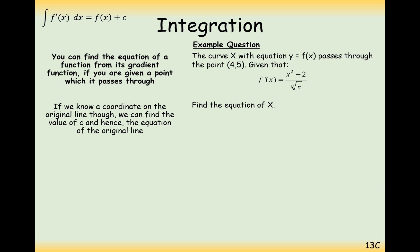Another tricky question here. We have the gradient function here as x squared minus 2 over root x and it goes through the point (4, 5). So two-step process again. Integrate your function and then substitute in your coordinate. The first thing we'll have to do when we're integrating this is split up our fraction into two separate numerators. Rewrite this as x to the power of n and then integrate.